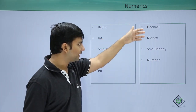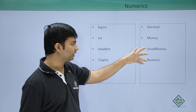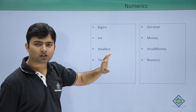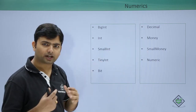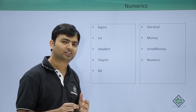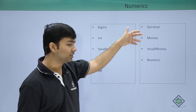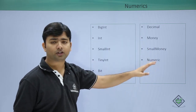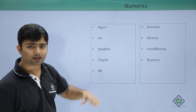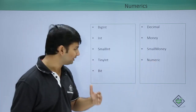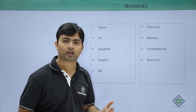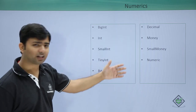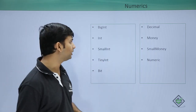For decimal numbers, you have decimal, money, and smallmoney — which will also include the currency symbol along with the number — and numeric, where you can pass the size as per your requirement. We will have a look at that as well.